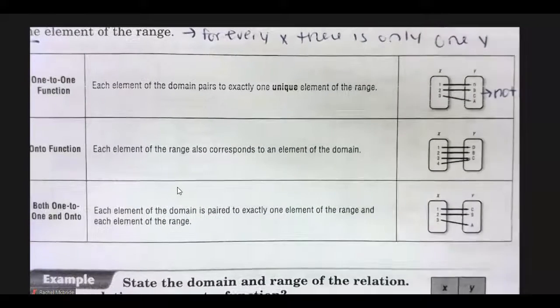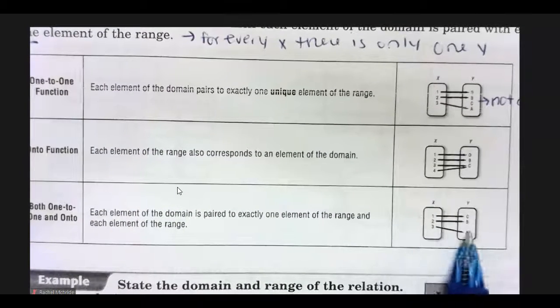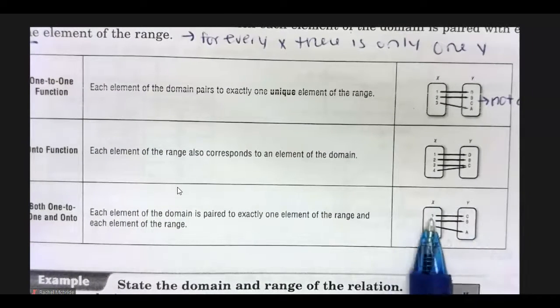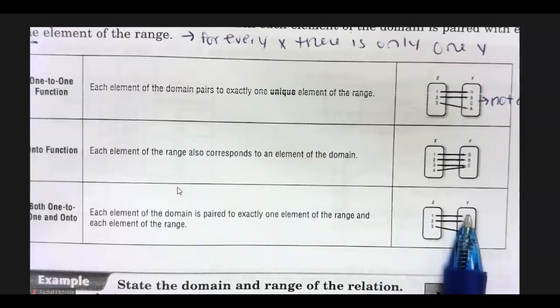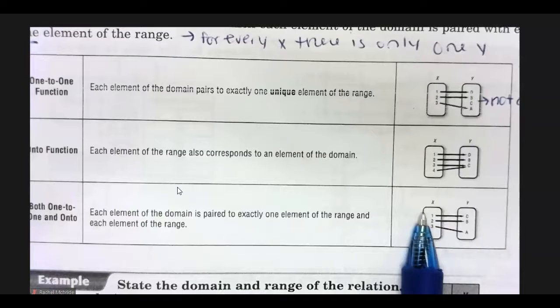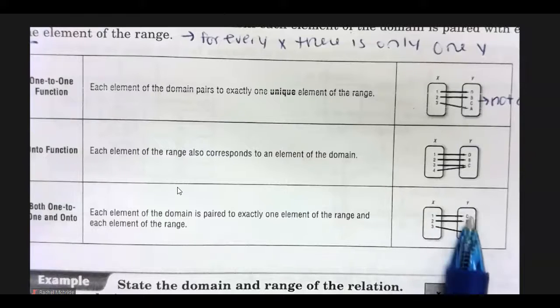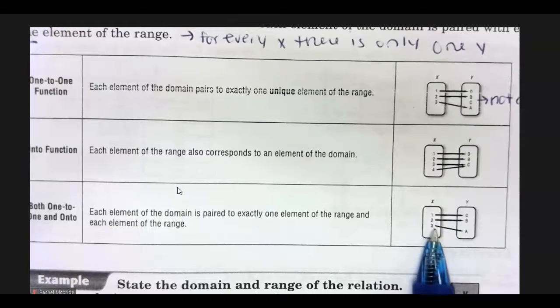Whereas in the last example, it's both one to one and onto because for every x, there is only one y. And for every y, there is only one x. And every y has an x.